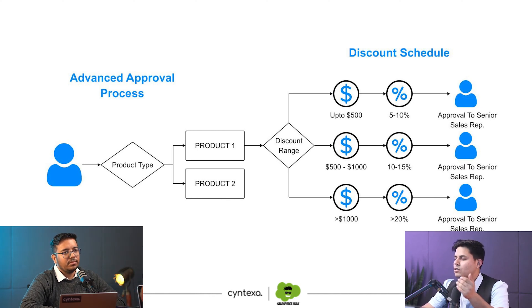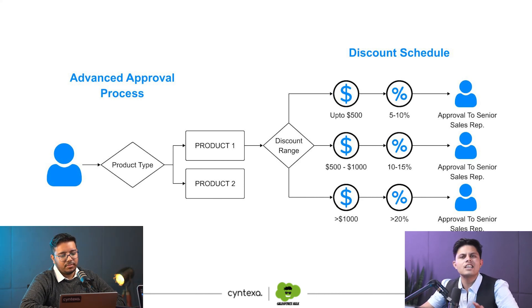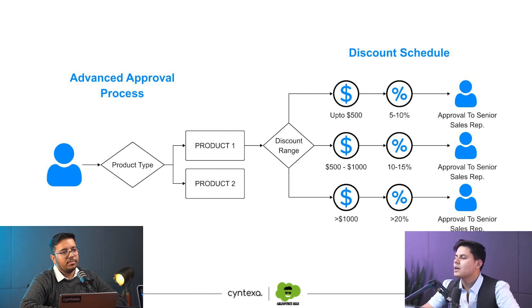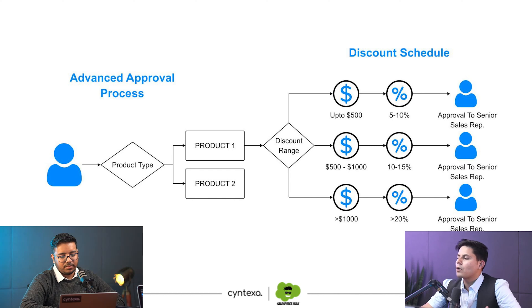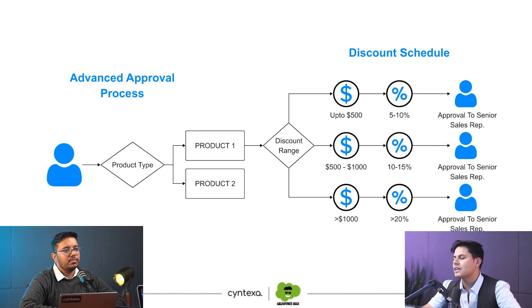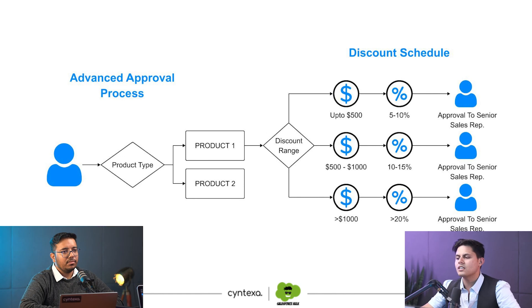For example, if the discount range is up to $500 and around 5 to 10 percent — whichever way you want to set it — the approval should go to the senior sales rep. But if it is more than that and less than $1,000, or 10 to 15%, it should go to a different senior sales rep. And if it is more than that, it can go to a manager or someone in a leadership role.